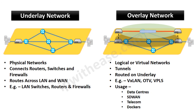On the other side, overlay networks are more of logical or virtual networks. They are formed via tunnels — overlay tunnels — which are created on top of LAN and WAN networks. That is, they are routed on top of the underlying networks. Examples of overlay networks are VXLAN, OTV, and VPLS, wherein encapsulation and de-encapsulation of the data packet happens for transitioning between overlay and underlay networks.